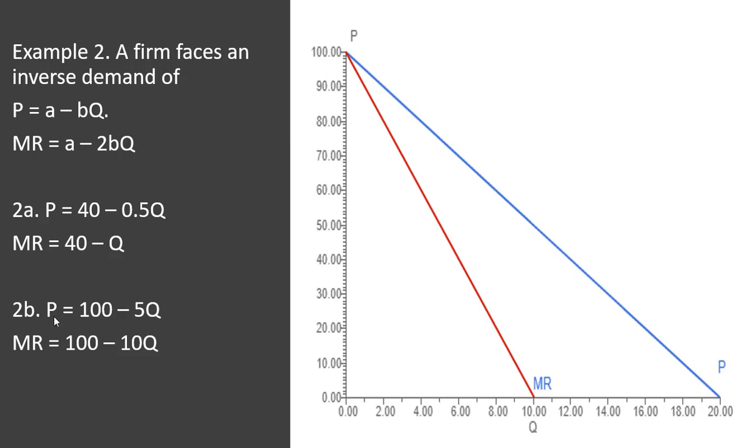Another numerical example, maybe a firm faces an inverse demand of price equals 100 minus 5Q. What is marginal revenue? Same vertical intercept of 100, but the slope here is twice as steep. So it's minus 2 times 5, or minus 10Q.